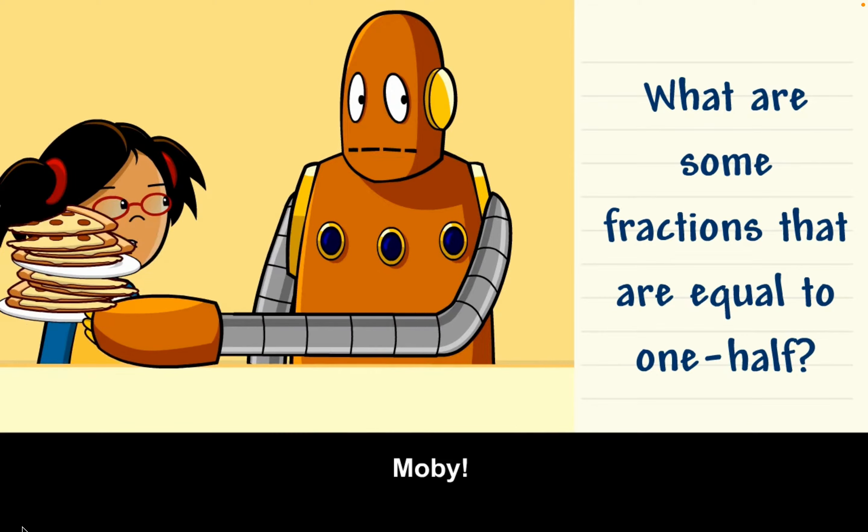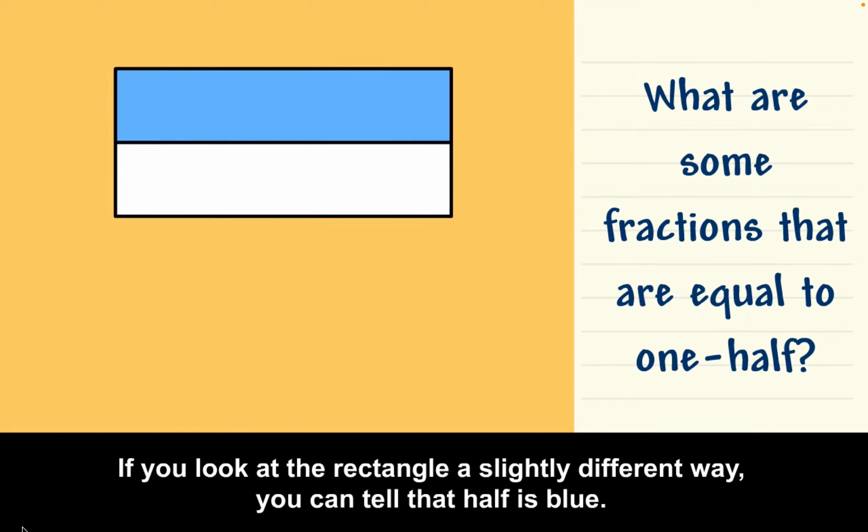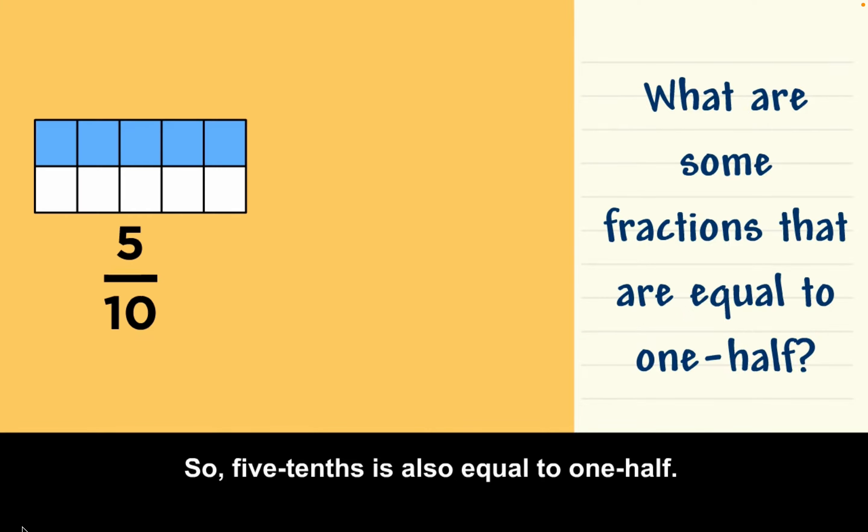Moby! On this rectangle, five out of ten equal parts are blue. If you look at the rectangle a slightly different way, you can tell that half is blue. So, five-tenths is also equal to one-half.